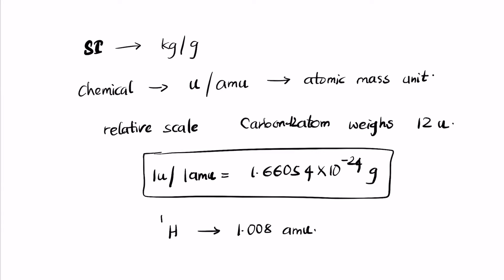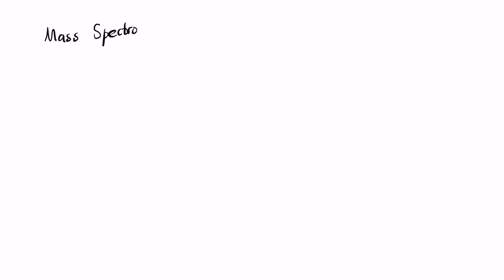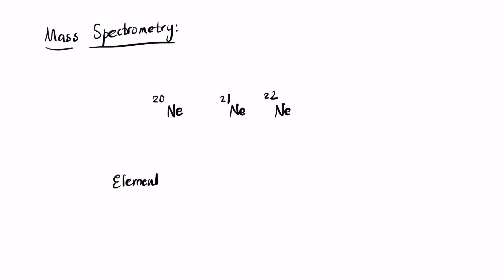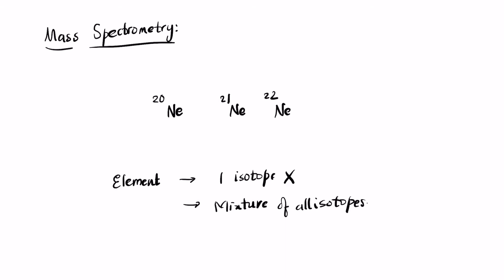This brings up the question: how do you find the isotopic mass, or how do you know that isotopes can exist? One way of doing this is by a method called mass spectrometry. In general, when you take an element, all of the element is not one single isotope — you get a mixture of all isotopes. To find how much of the mixture is a particular isotope, we use mass spectrometry.